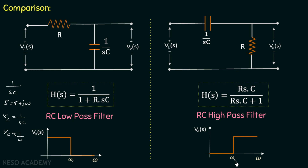The starting frequency from which the high pass filter allows high-frequency signals is called the critical frequency. Similarly, for the low pass filter, the highest frequency up to which it allows signals is also called the critical frequency. In the low pass filter the critical frequency is the highest allowed frequency, whereas in the high pass filter the critical frequency is the lowest frequency — after which the output becomes non-zero. Before the critical frequency in a low pass filter the output is non-zero, but after it the output is zero. We can now easily differentiate between the RC low pass filter and the RC high pass filter.